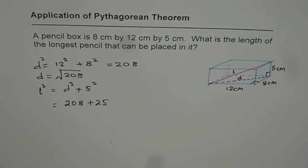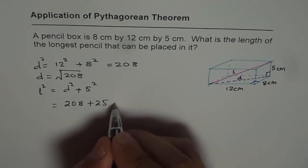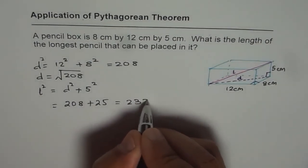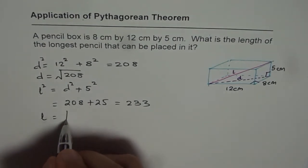So 208 plus 25 equals 233. Therefore, the length L is square root of 233.